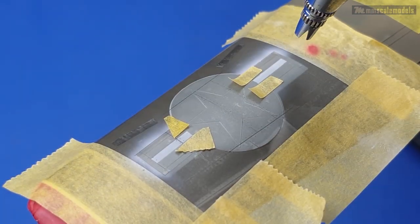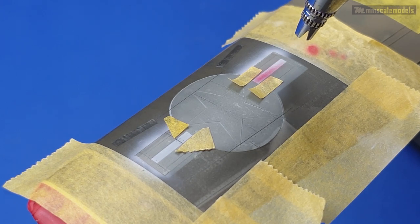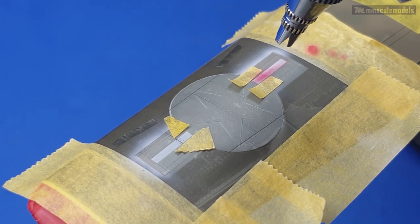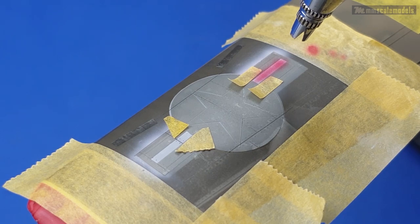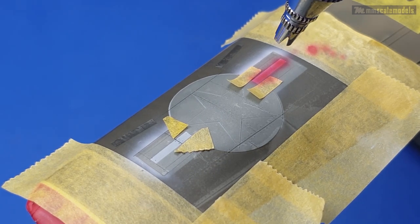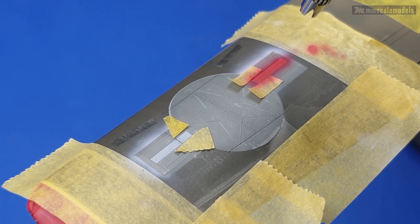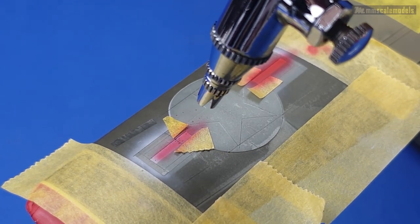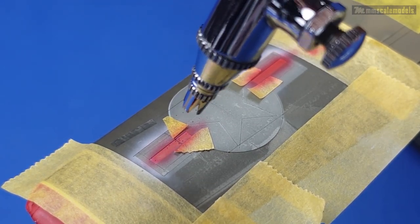And after some additional countermeasures, I will start applying the insignia red from MRP. And after this is dry I will apply the masks again and I will proceed to the next color.